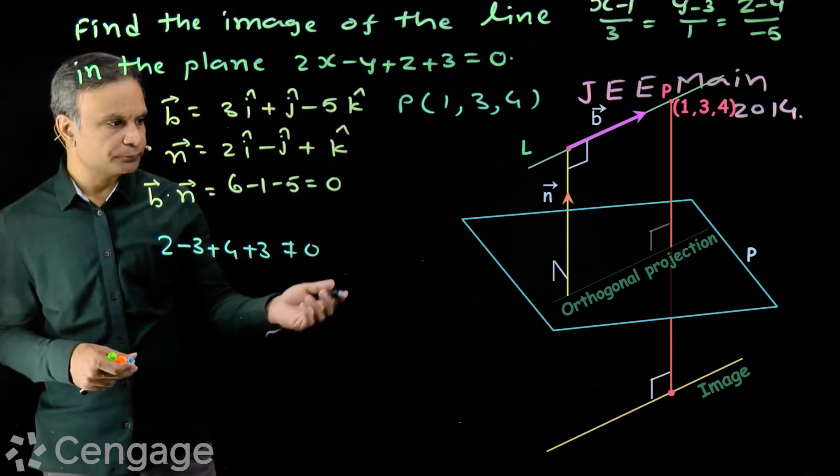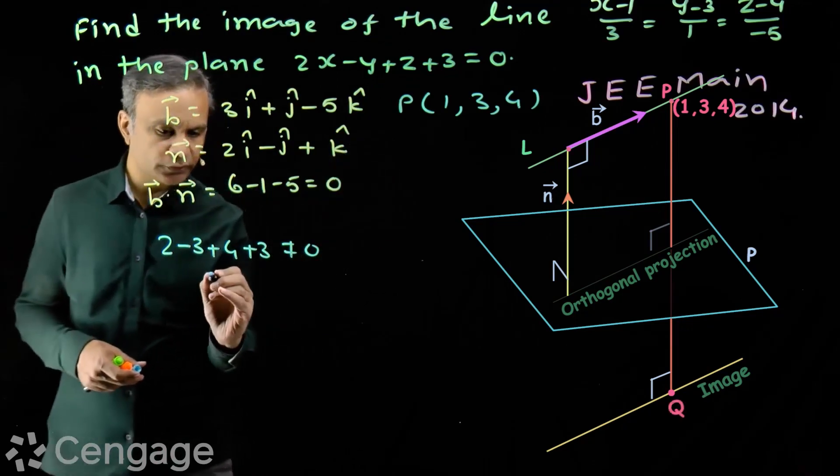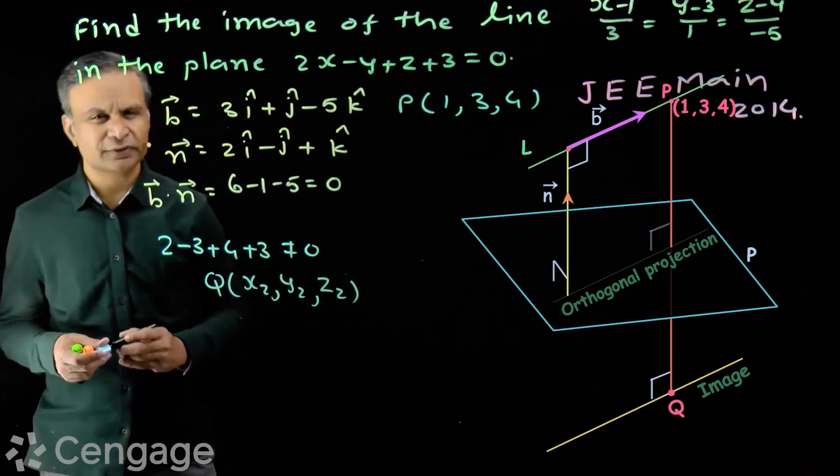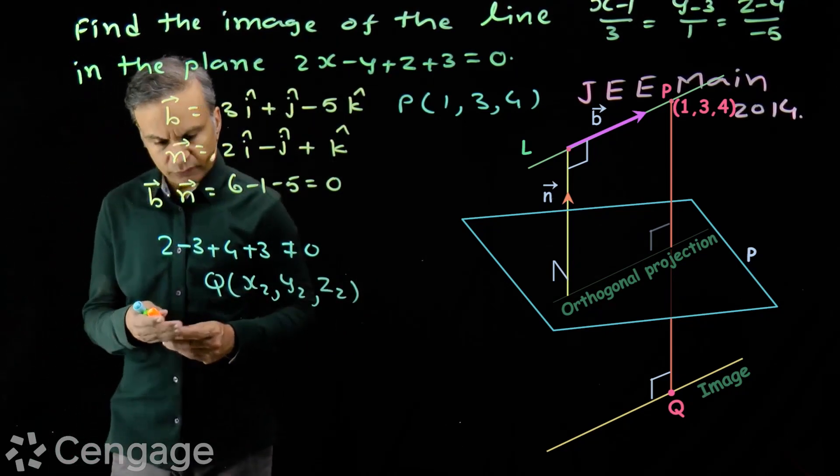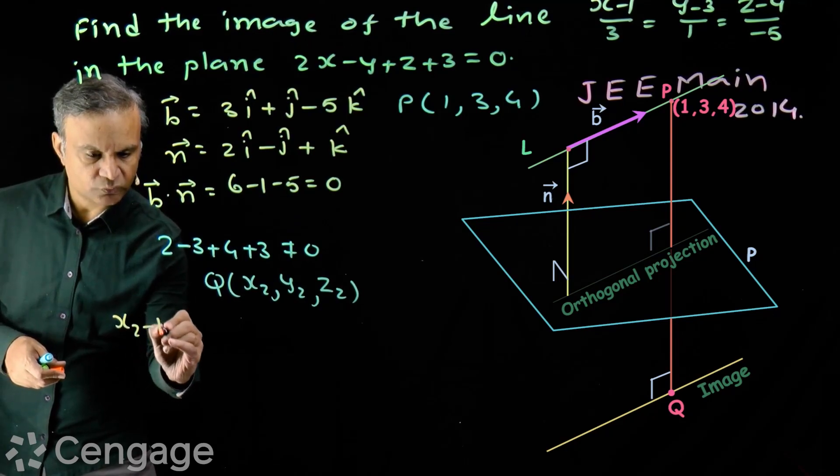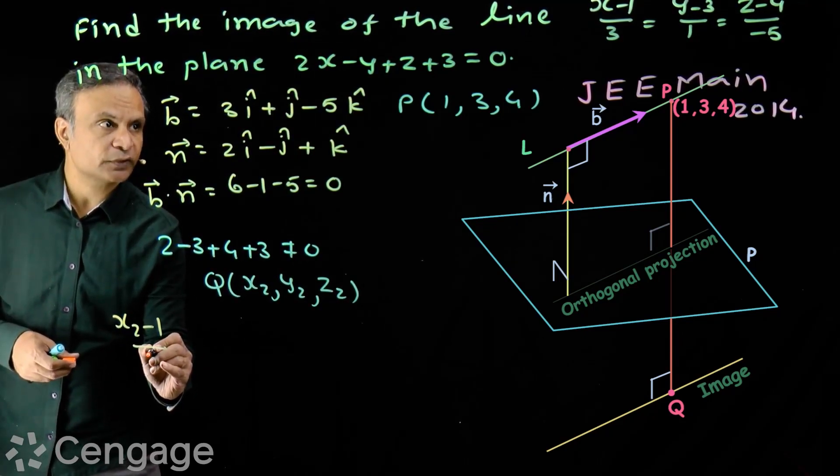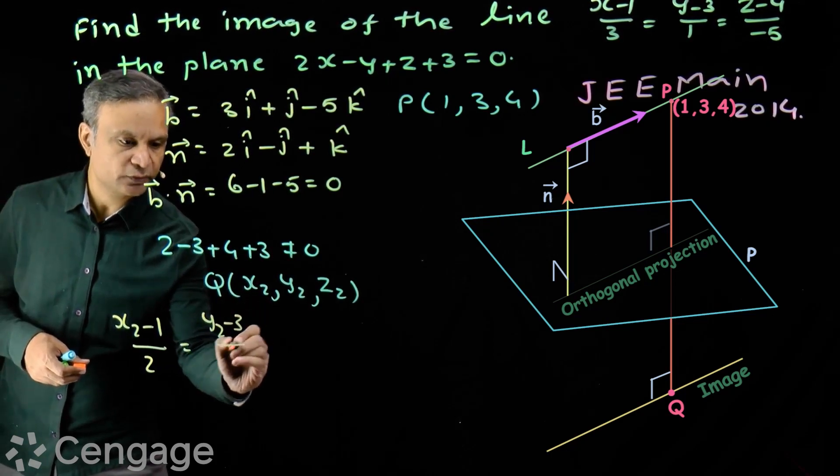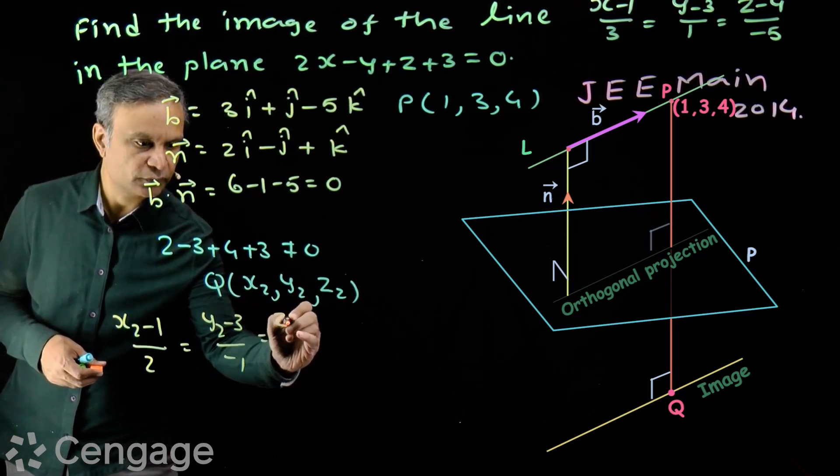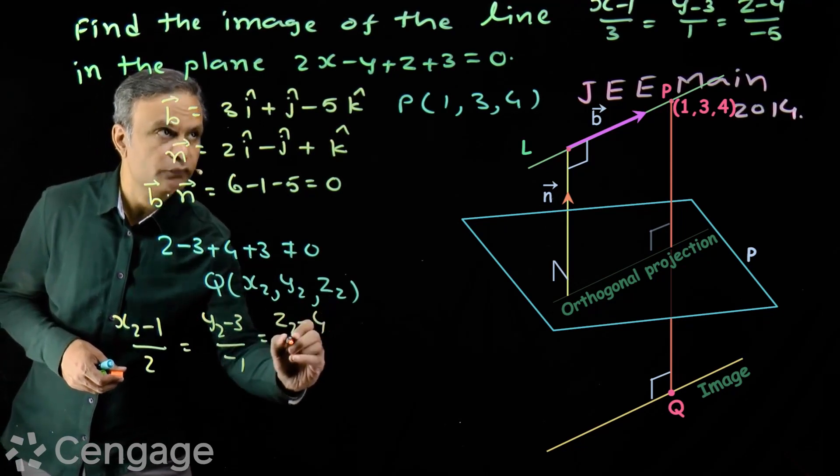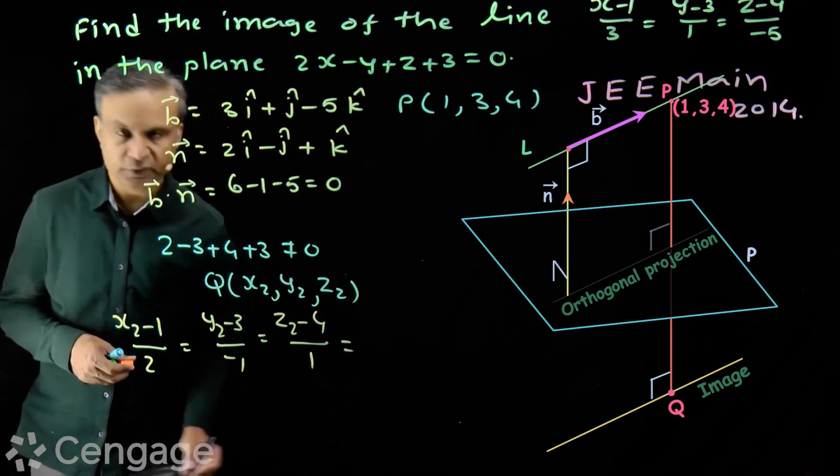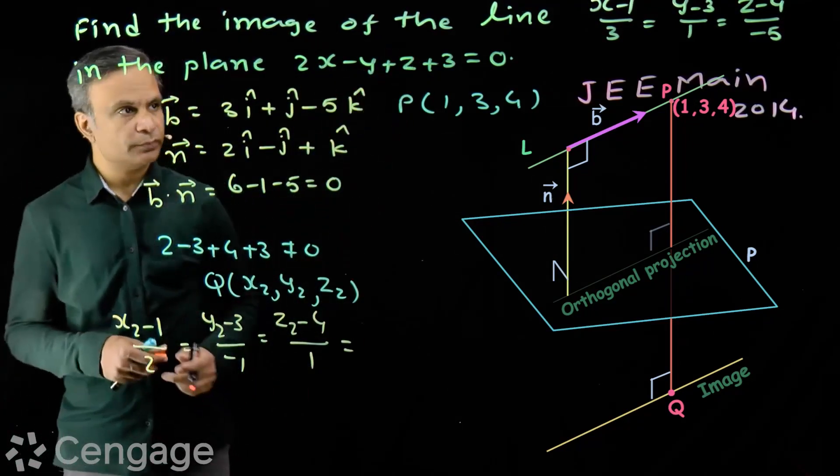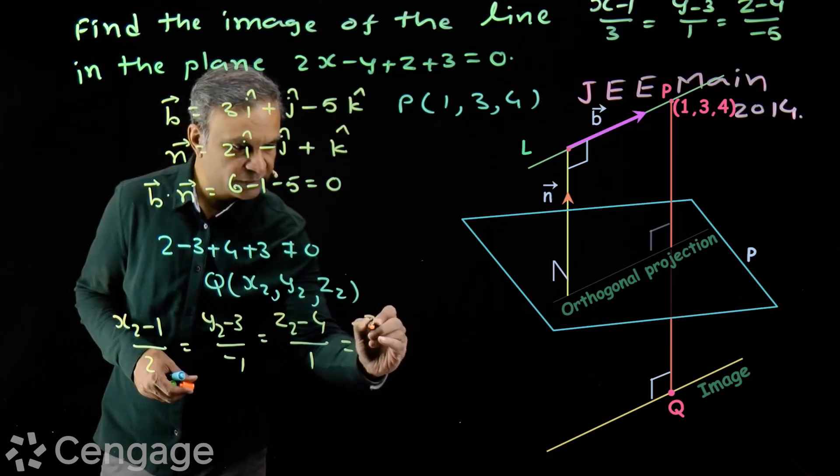Suppose image is Q. Q having coordinates x2, y2, z2. Hame frequently use karte mein formula. Using formula, we have x2 minus 1 over 2 equal to y2 minus 3 over minus 1 is equal to z2 minus 4 over 1. Take this formula. Here 2, minus 1, 1 are direction ratios of vector normal to the plane. This is equal to minus 2 into.